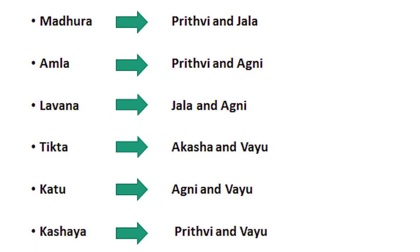Amla Rasa is the second strongest Rasa of the six. It was Agneya or Vidahi as mentioned in the last session — that is, it has the predominance of Agni. Amla Rasa is actually a slight variant of Madhura Rasa which had the predominance of Prithvi and Jala. Here, it has Agni along with Prithvi. Some other Acharyas also say that it has the predominance of Agni and Jala, but we will go according to what Bhagad Acharya has mentioned.